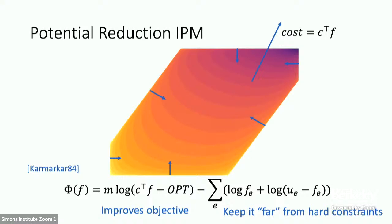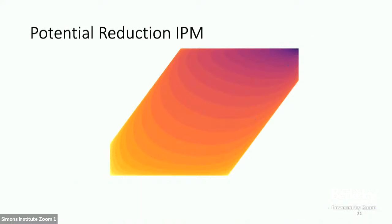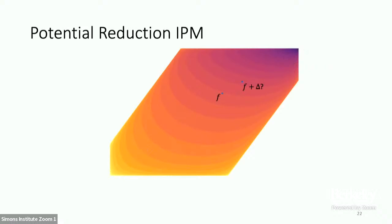Starting from a point F0 in the interior of the polytope, you take a step to F1 while decreasing the potential, then F2, and so on. Once the potential becomes small enough, you are guaranteed to be close to the optimum, and you can round to a vertex of the polytope. The key question is: if you're currently at point F, how do you move to the next iterate F plus delta? Different recipes give different IPMs.